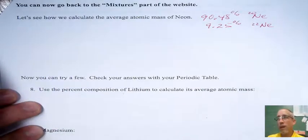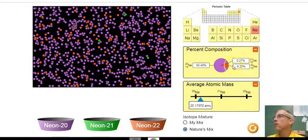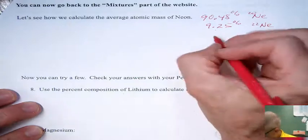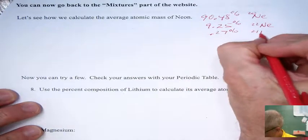And the remaining little bit, and there's not much that's left, is our neon 21. So that's 0.27 percent.